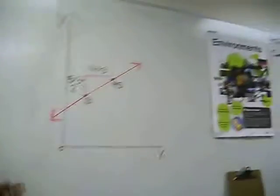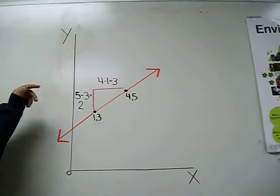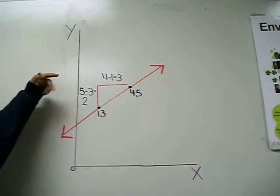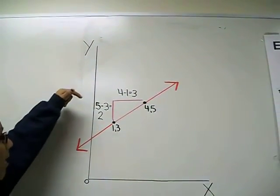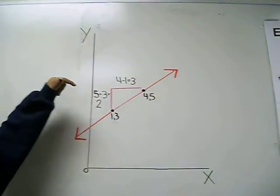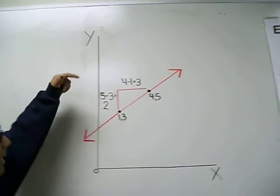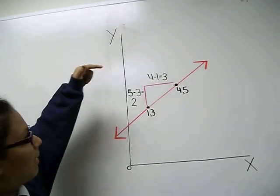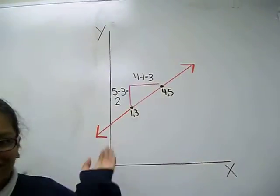And on the graph, you have one point which is (1, 3), and one point which is (4, 5). And so 5 minus 3 equals 2 — that's your rise. And 4 minus 1 equals 3 — that's your run. And there's your rise over run.